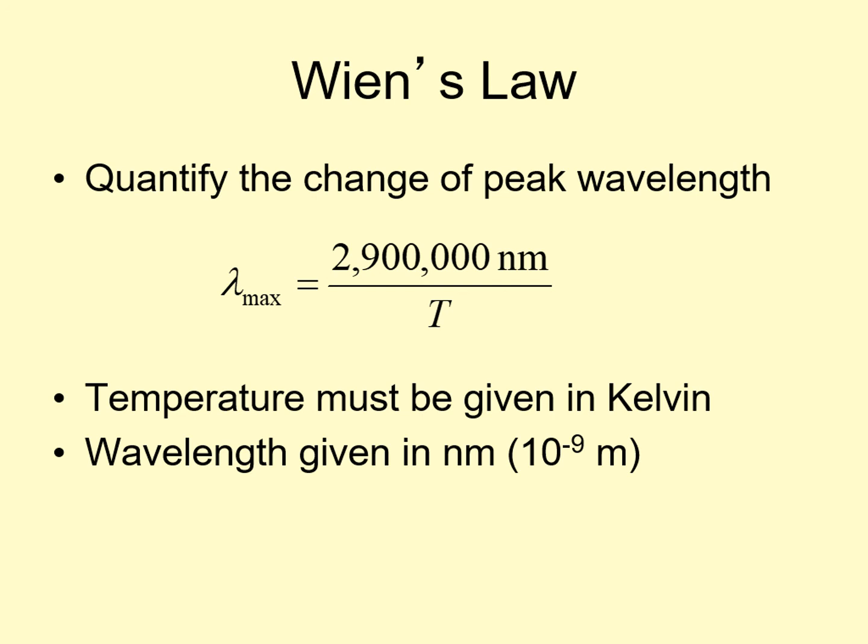While this form of the equation is useful for predicting what kind of light something will emit, in astronomy, we usually have the opposite problem. We know what kind of light an object is emitting. We can see it. What we don't know is what temperature it is. Using Wien's law, we can find the temperature.